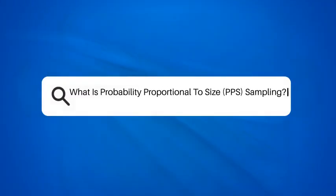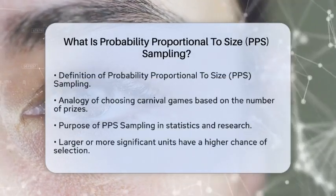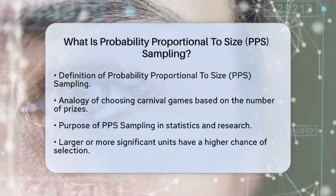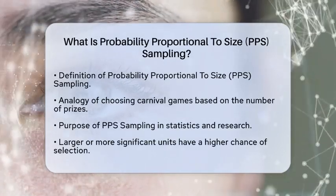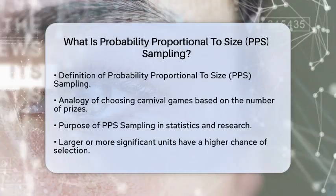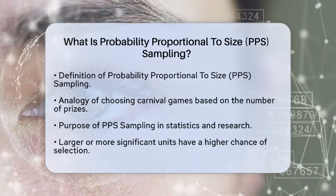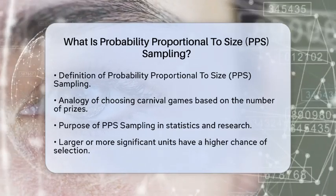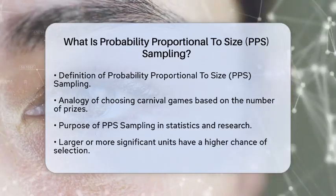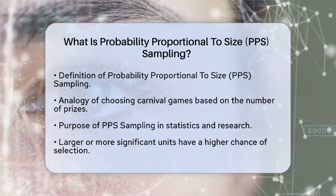What is probability proportional to size? PPS sampling. Imagine you are at a carnival, and you want to choose a few games to play. Some games have more prizes than others, making them more appealing. If you were to select games based on the number of prizes they offer, you would be using a method similar to probability proportional to size sampling.